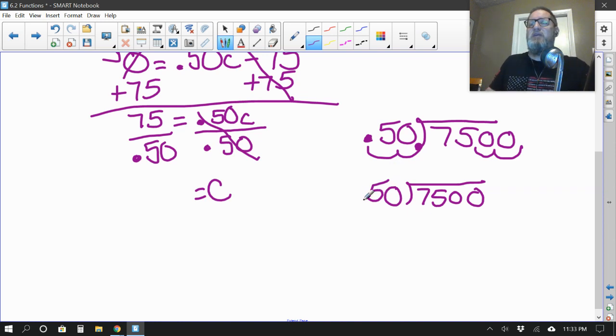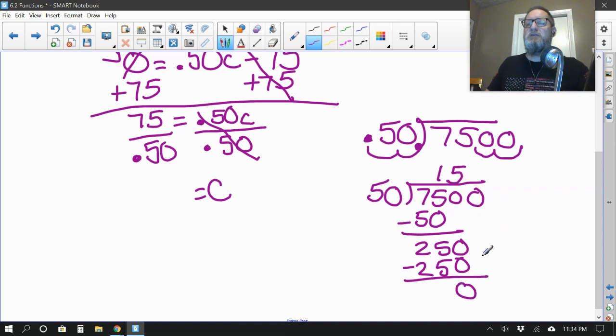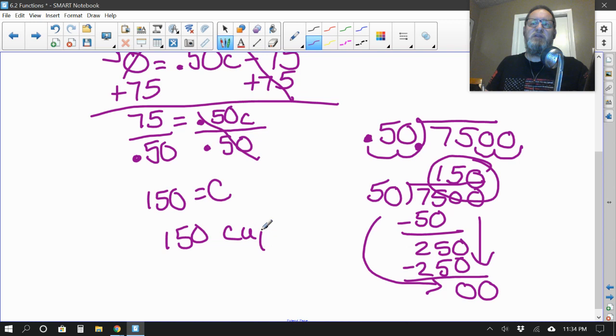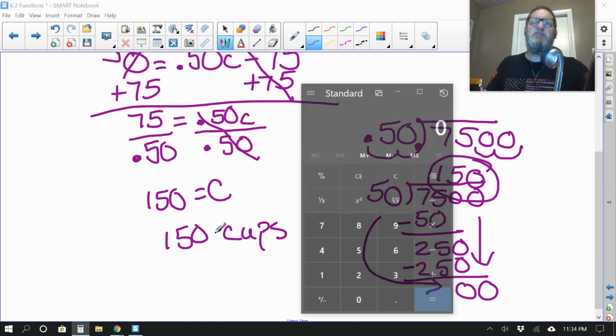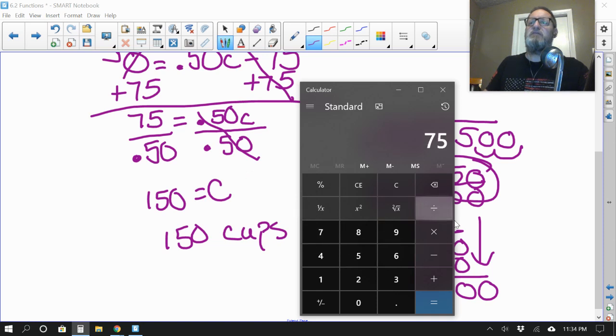So I'm actually doing 50 into 7,500. That will give me the same answer as this problem if I would have brought up a calculator. Okay. So 50 goes into 75 one time. Okay. Subtract. That would be 25. Bring down my zero. Okay. And 50 goes into 250 five times, zero times. And there we go. 150. So it looks like we need to sell 150 cups. Why don't I bring up my calculator and just check that against this problem? 75, just to make sure I get the same answer, divided by 0.50. Do I still get 150? Yep, great. So we did that right. Moving on.